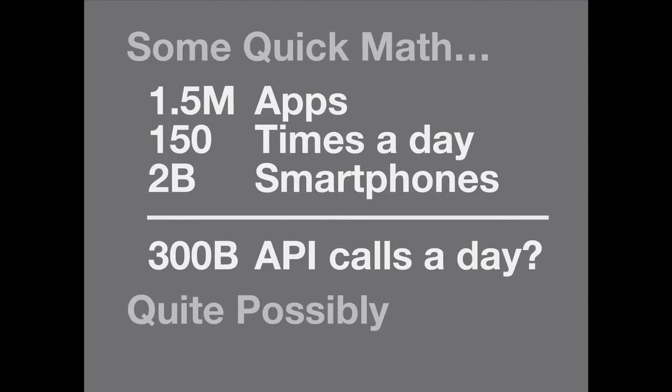The scale goes up significantly. There are 1.5 million apps in the app stores. An active smartphone — of which there are about 2 billion — is opened 150 times a day. Every time you open your device, it's likely invoking or responding to an API request. That means roughly 300 billion API calls a day directly from apps, which comes out to about 30,000 requests per second just from apps to the back end.